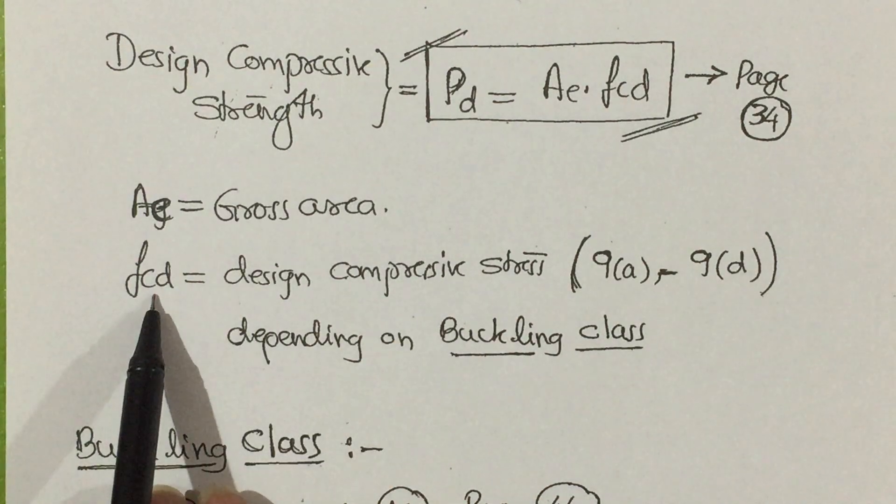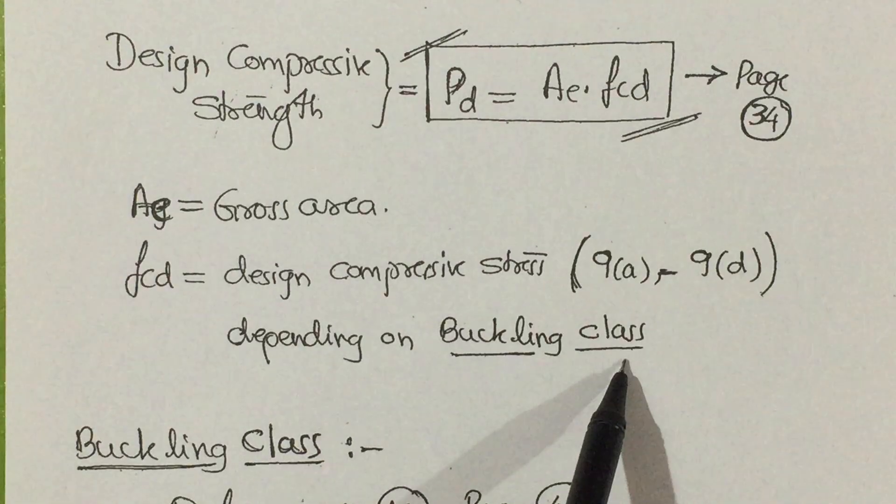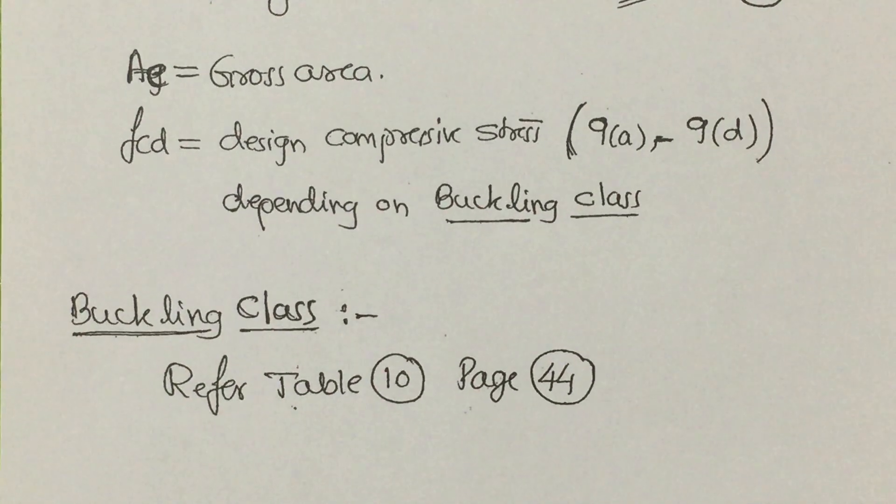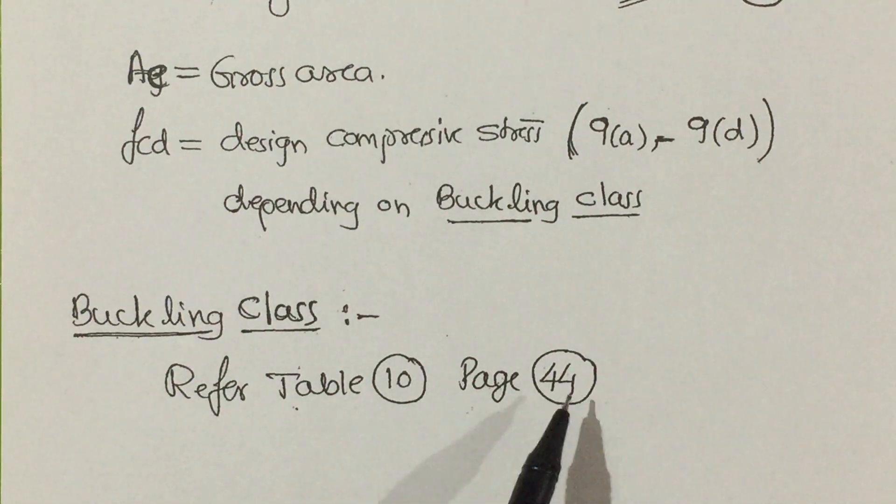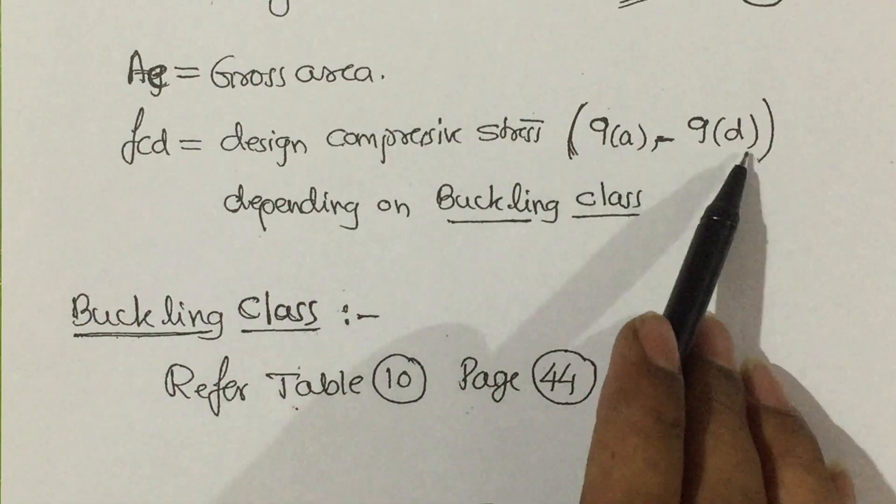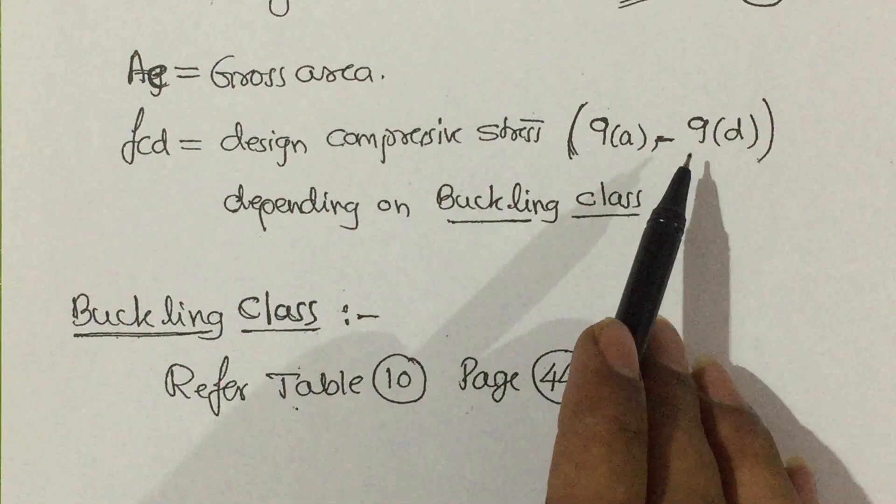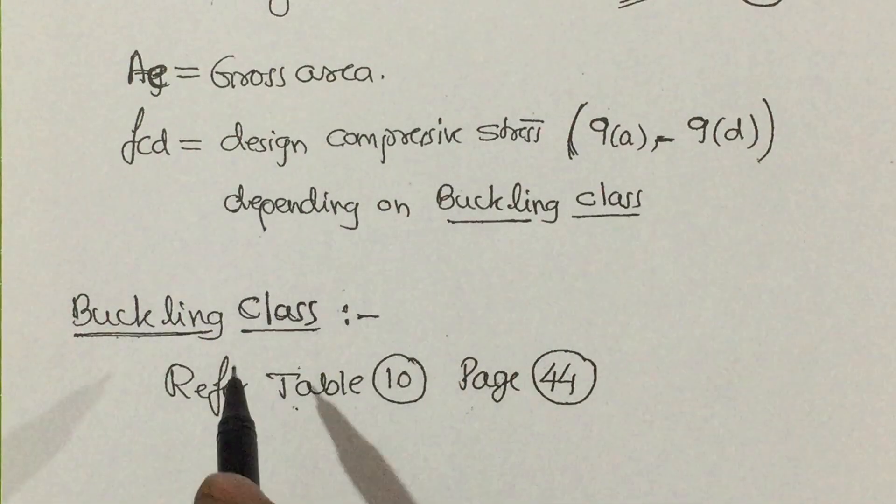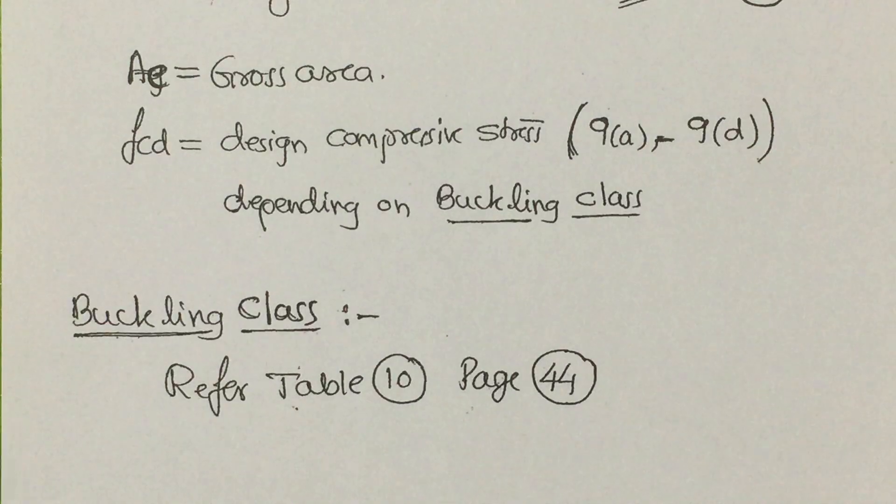This fcd value depends upon the buckling class. That buckling class we can get from Table 10 of page 44. Once you get buckling class, you need to look in the tables from 9a to 9d. Within that, you are going to get fcd value with respect to the lambda and phi value. So that's all for this session, thank you.